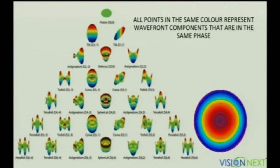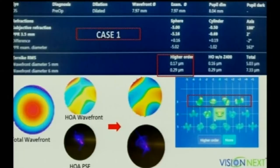Every wavefront in phase forms one color — all the reds are in phase, all the yellows are in phase, all the blues are in phase. The lag between them gives different shapes, forming the Zernike polynomials. Always remember: aberrations toward the center are more harmful for visual quality than those in the periphery.